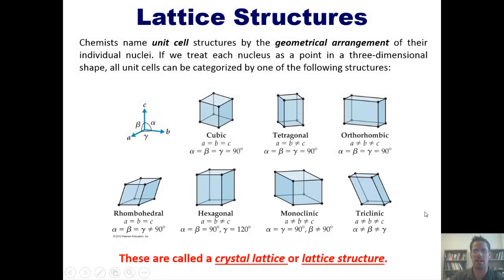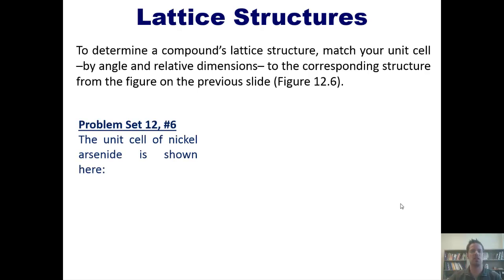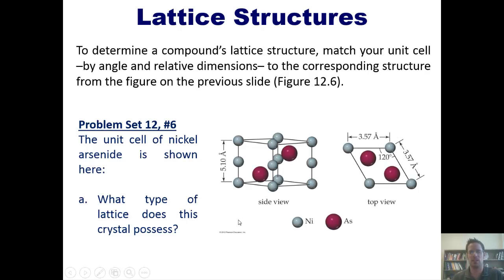To determine a compound's lattice structure, you need to match your unit cell by angle and relative dimensions to the corresponding structure from the figure I just showed you. For instance, in this problem it tells us that the unit cell of nickel arsenide is shown right here. What type of lattice does this crystal possess? I'm not going to answer this question here, but we'll post a link to a separate video that you can watch if you want to.